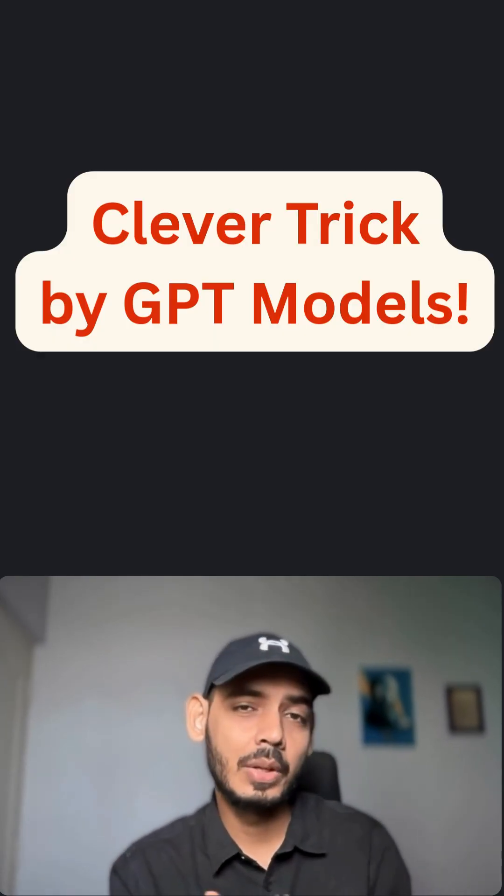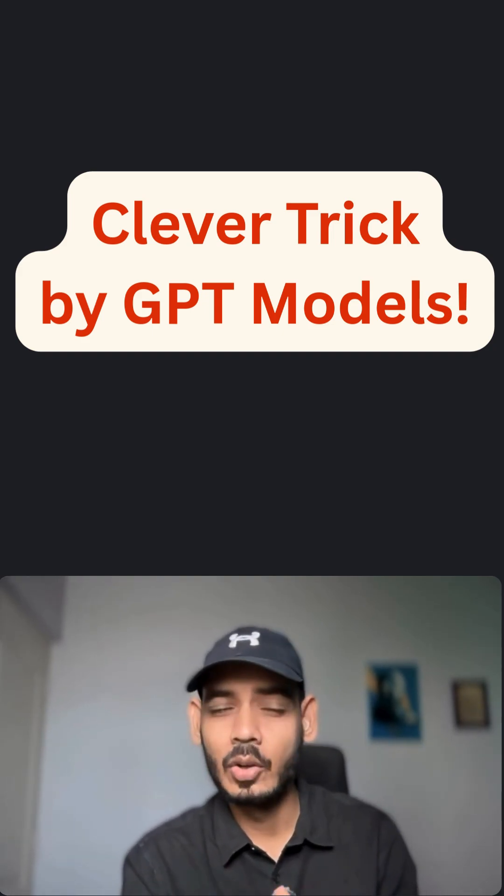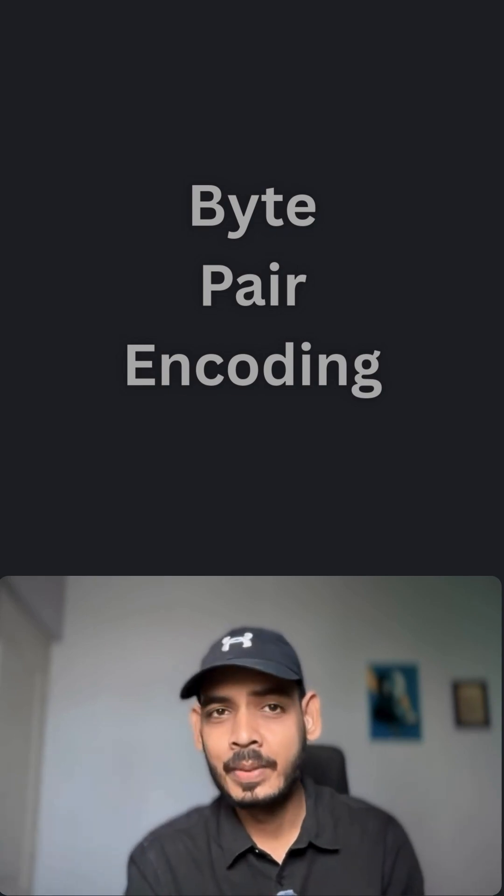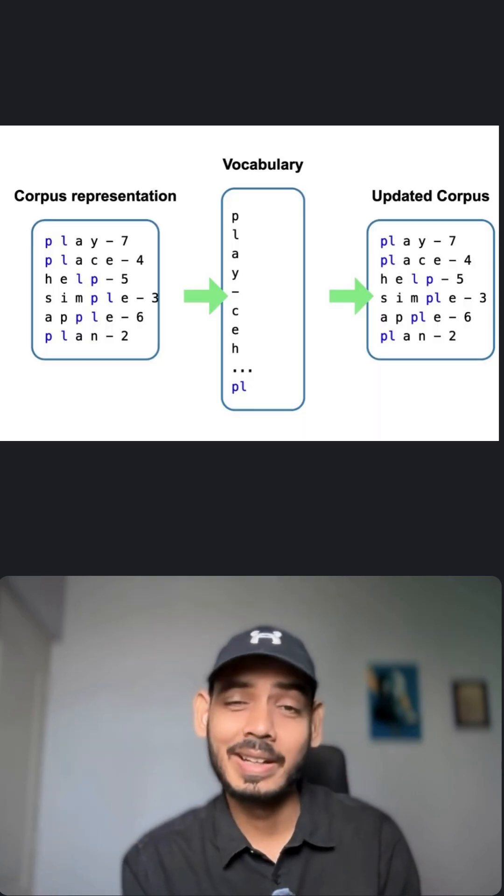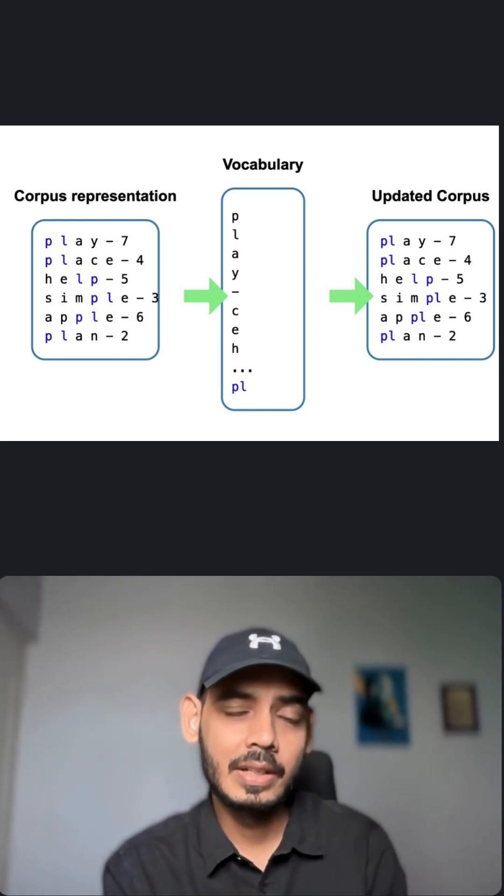But when it comes to LLMs like GPT models, they use a clever technique called byte pair encoding. It doesn't just use whole words but creates its own vocabulary by merging frequent characters into subword units.